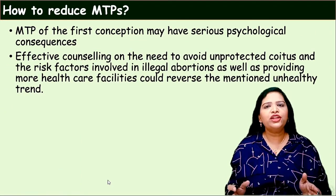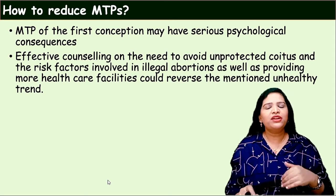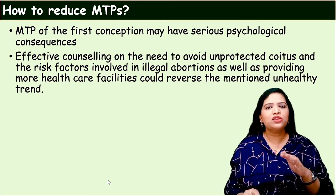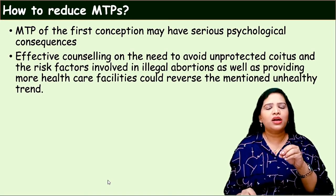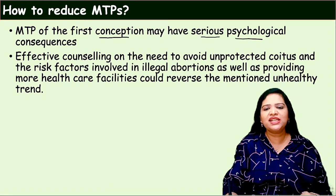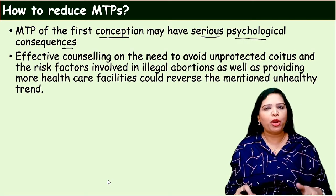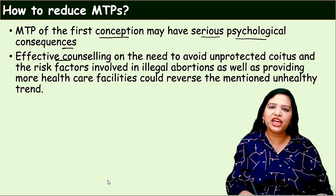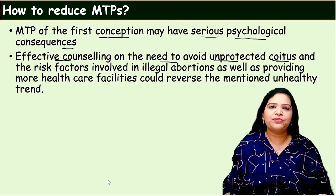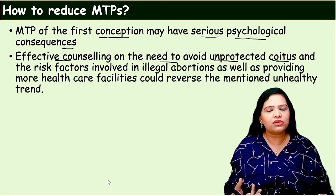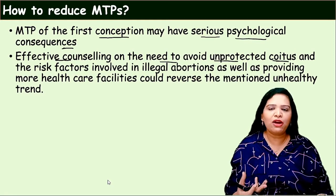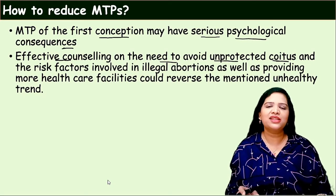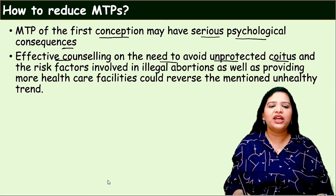Let us see how to reduce or avoid MTPs. Though we have a strict act regarding MTP in India, people are doing this illegally. If it is a woman's first conception and she has undergone abortion, it has very serious psychological consequences for her because that is her first baby. To avoid such conditions, we have to give effective counseling — counseling about the need to avoid unprotected coitus, sex education to young persons about birth control procedures. This will avoid unnecessary pregnancy, and if unnecessary pregnancy is avoided, MTPs will be reduced.